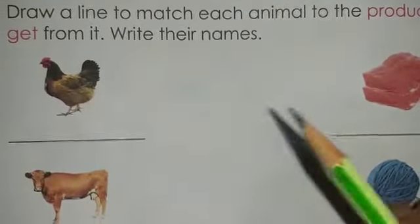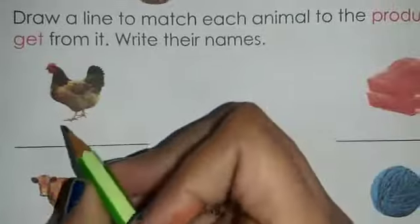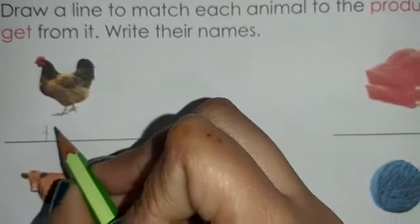The animal over here is hen. So, we're going to write down hen over here. H-E-N, hen. Okay?